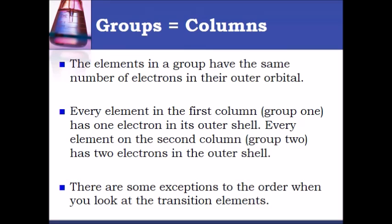Every element in the first column, which is group one, that includes the alkali metals and hydrogen, has one electron in its outer shell. Every element in the second column, which is group two, has two electrons in its outer shell.